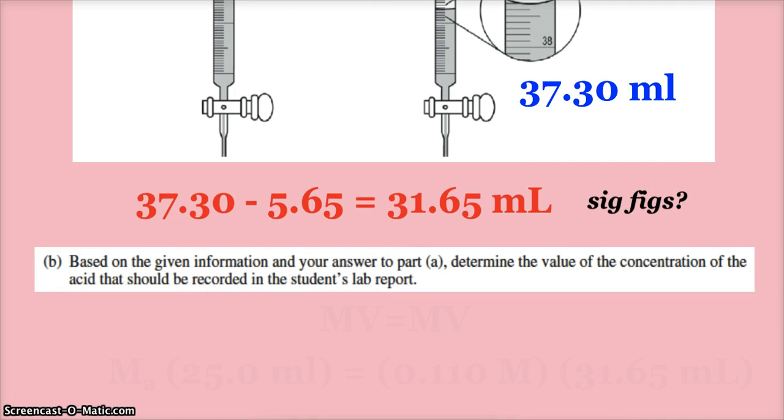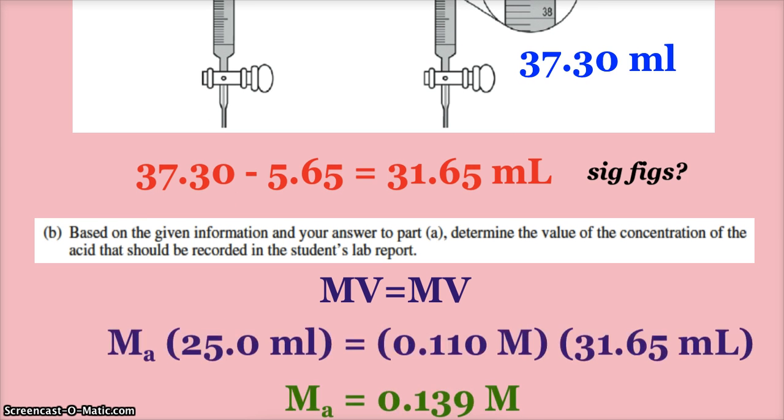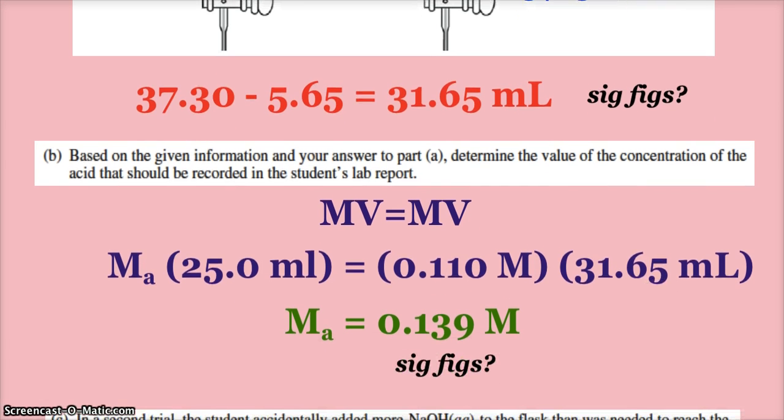Based on the given information, determine the value of the concentration of the acid. You can do stoichiometry, but again, a one-to-one ratio, monoprotic and sodium hydroxide, MV=MV looks like it would be just great. So the molarity of my acid times the volume of my acid equals molarity of base times volume of base.